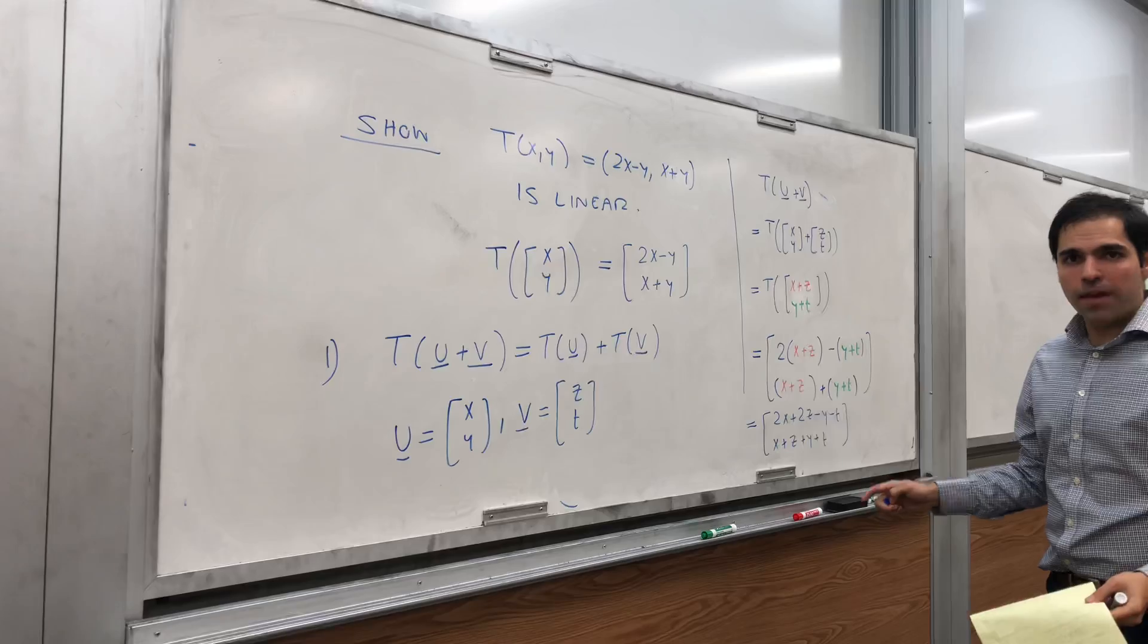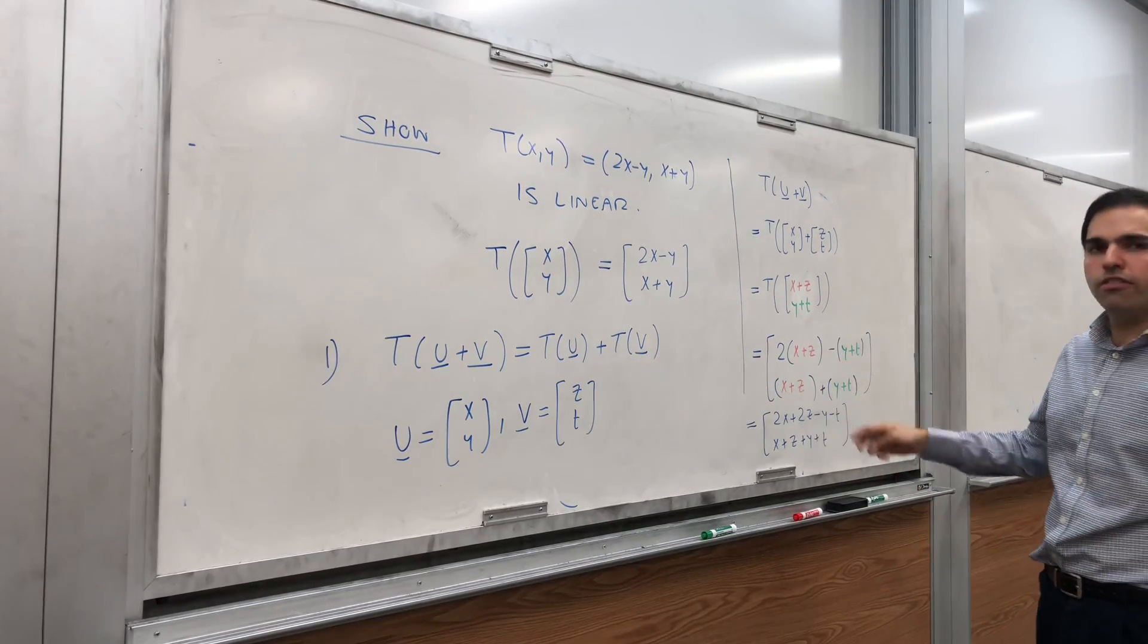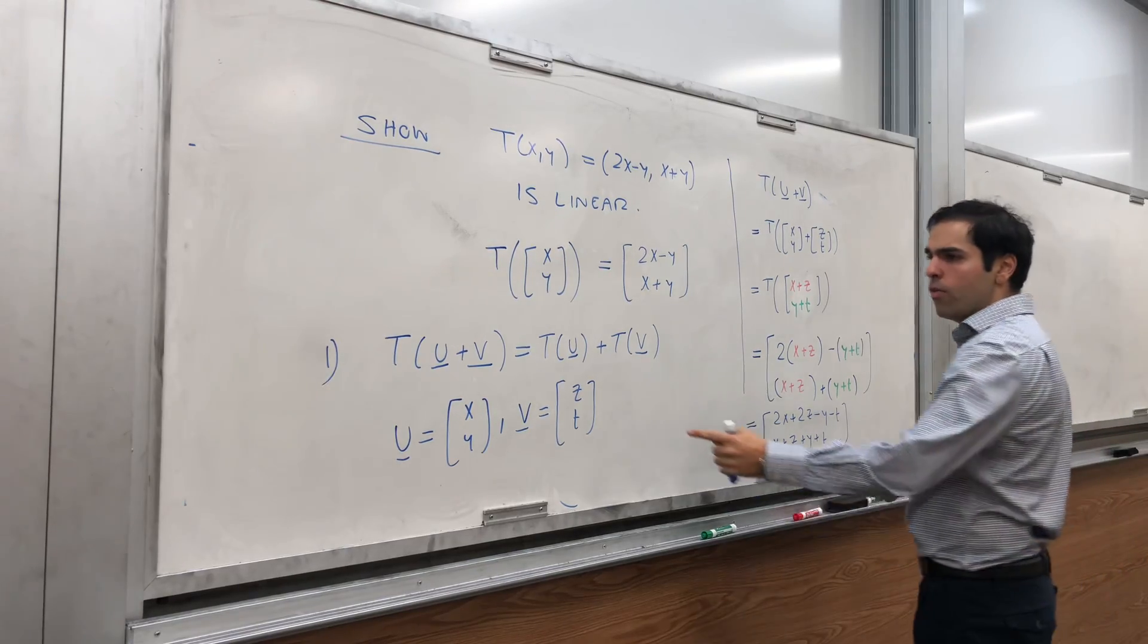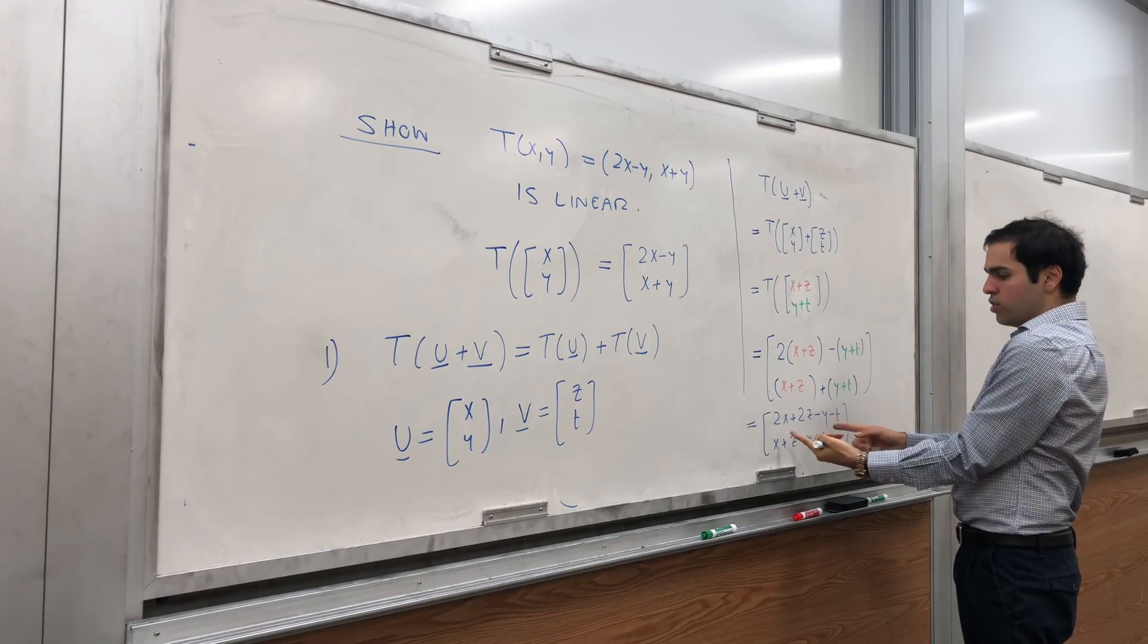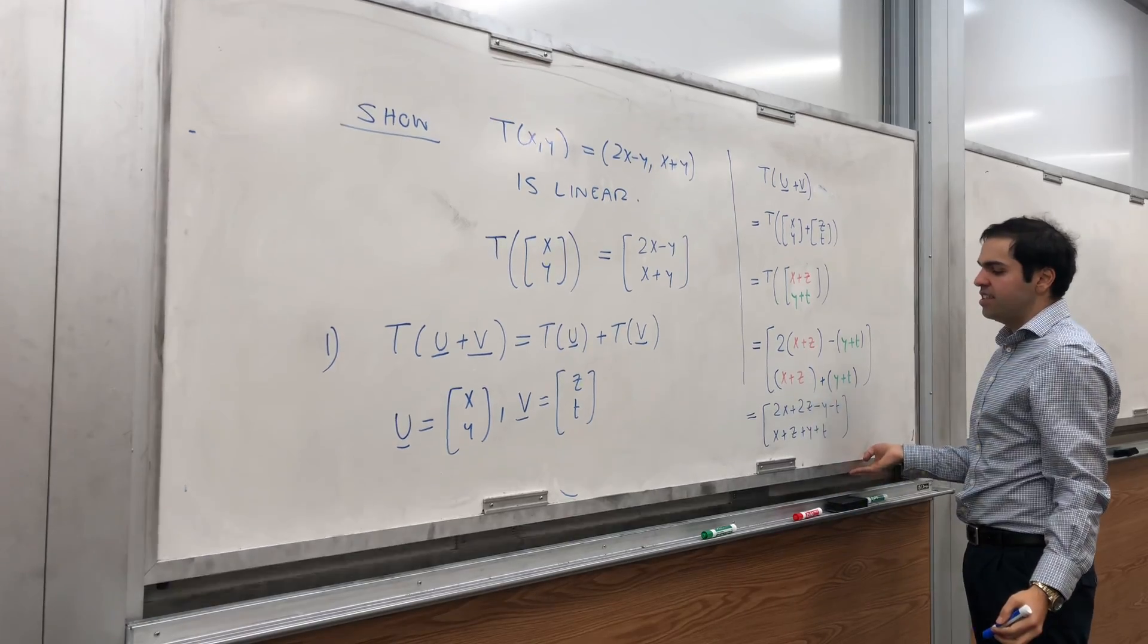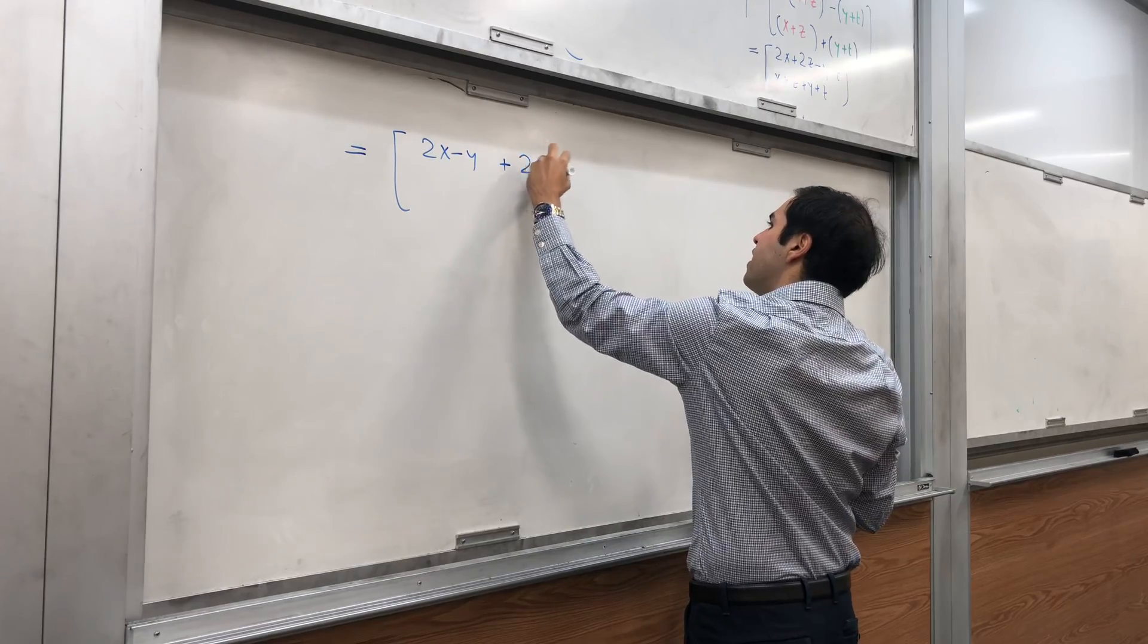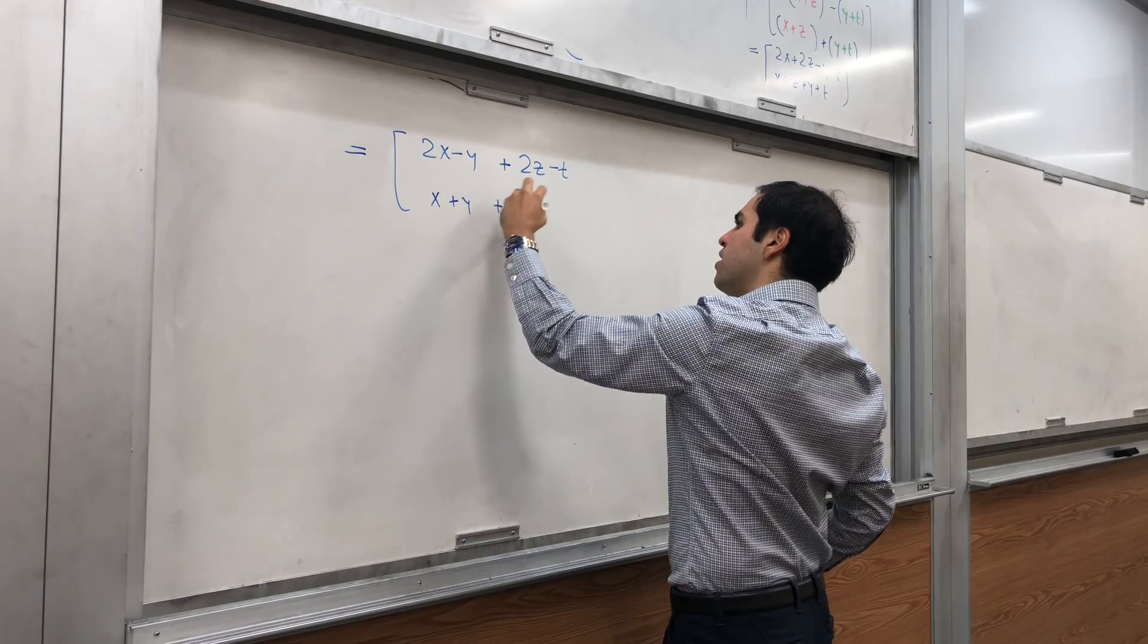Okay, what's the next step? You could either do it this way, or you can just calculate T(u) + T(v) separately and see if it gives you the same answer. It's a perfectly acceptable way of doing this, but maybe there's a slightly more elegant way. Well, we would like to write it in terms of T(x, y), and for this we need 2x - y. So how about, and you'll see in a second why this is useful, how about we just group x and y together and z and t together? Then we get (2x - y) + (2z - t). And same thing above, let's group x and y together. So x + y plus z + t.